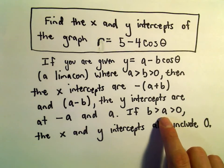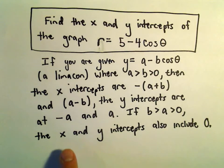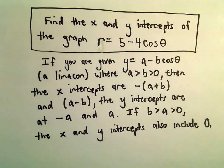If your b value is bigger than your a value, it's going to turn out that the x and y intercepts also include 0. But we don't have that in this case.